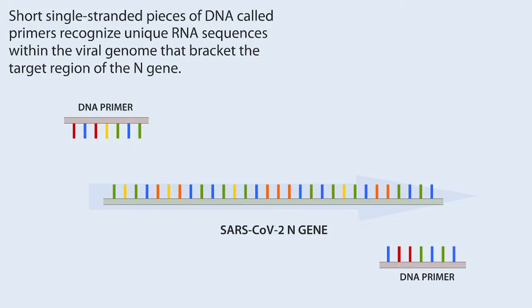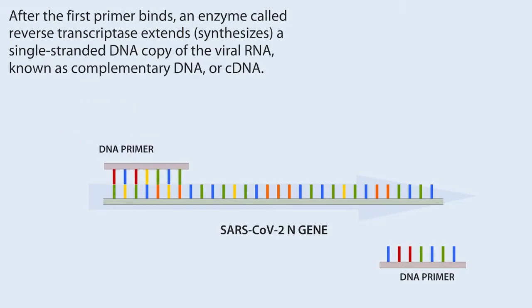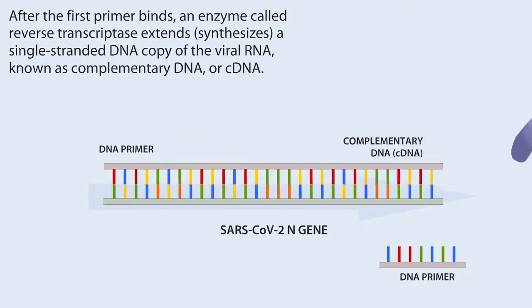Short, single-stranded pieces of DNA called primers recognize unique RNA sequences within the viral genome that bracket the target region of the N-gene. After the first primer binds, an enzyme called reverse transcriptase extends and synthesizes a single-stranded DNA copy of the viral RNA, known as complementary DNA, or cDNA.